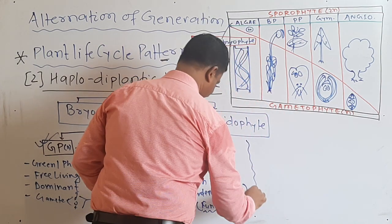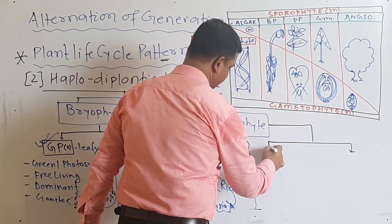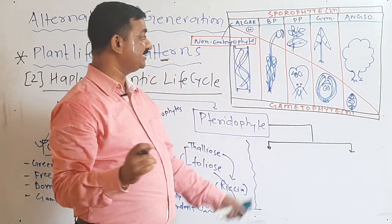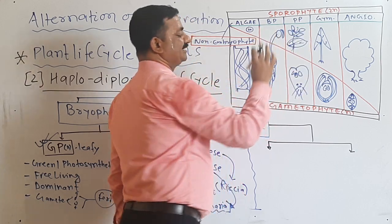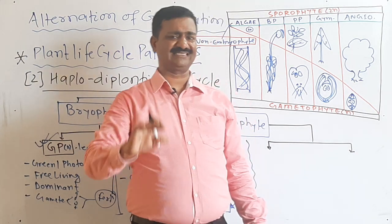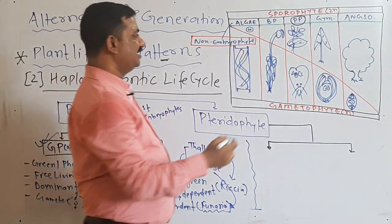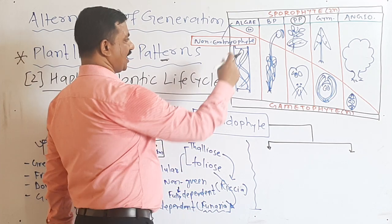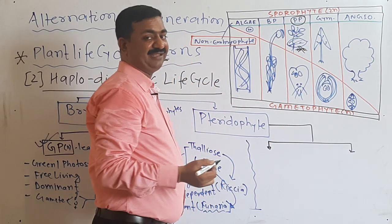Now talking about pteridophytes — similarly there will be two phases. Which one is more dominant? You will find almost fifty percent sporophyte and fifty percent gametophyte. This is a very unique group of the plant kingdom where the sporophyte and gametophyte are independent — there is no dependency of each other.